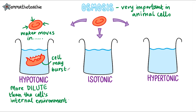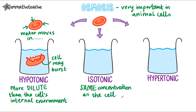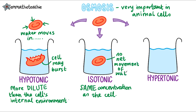Next, we've got an isotonic solution. This means that it is at the same concentration as the red blood cell. Because the two solutions are the same, there is no net movement of water — no osmosis occurs.